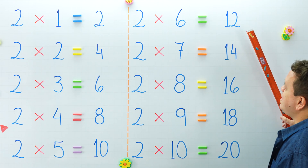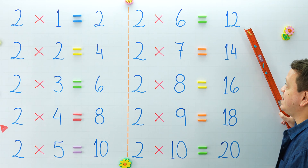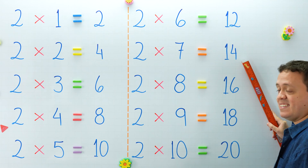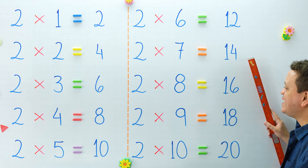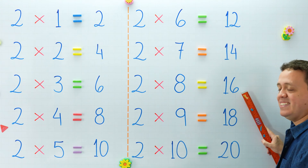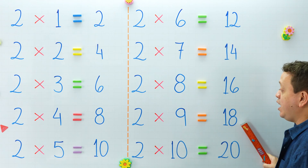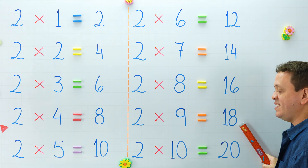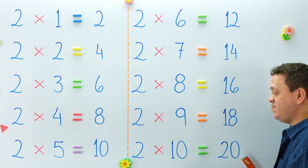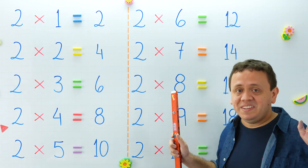In the next column, 2 times 6 equals? And 2 times 7 equals? The next one: 2 times 8 is equal to? And 2 times 9 equals? 2 times 10 is equal to? We're done with this table.